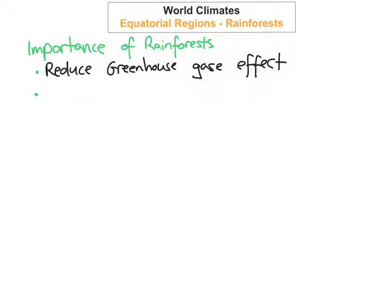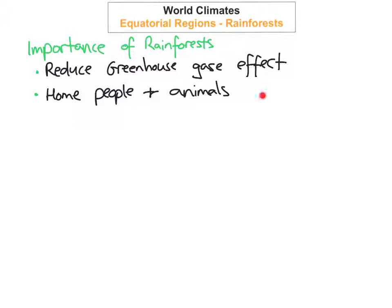The second reason is that rainforests are home to millions of people and animals. Many of our medicines are actually found in the rainforests because of all the plants and animals there. Many antibiotics and medicines actually come from the rainforests, so it's extremely important that we don't chop them down, as we could lose medicines — including ones that are yet undiscovered — that we could use in the future.